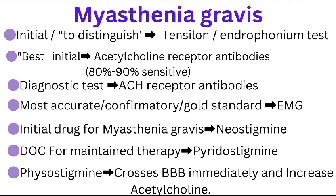Myasthenia Gravis is a chronic autoimmune disorder. The initial test, or the test which distinguishes it from Lambert-Eaton syndrome, is the tensilon or edrophonium test. The best initial test is acetylcholine receptor antibodies with a sensitivity of 80 to 90%. The diagnostic test is ACh receptor antibodies. If asked for the most accurate confirmatory or gold standard test, it is electromyography. Initial drug for Myasthenia Gravis is neostigmine, while the drug of choice for maintenance therapy is pyridostigmine. Physostigmine crosses the blood-brain barrier and increases acetylcholine, which is why it is avoided in Myasthenia Gravis.